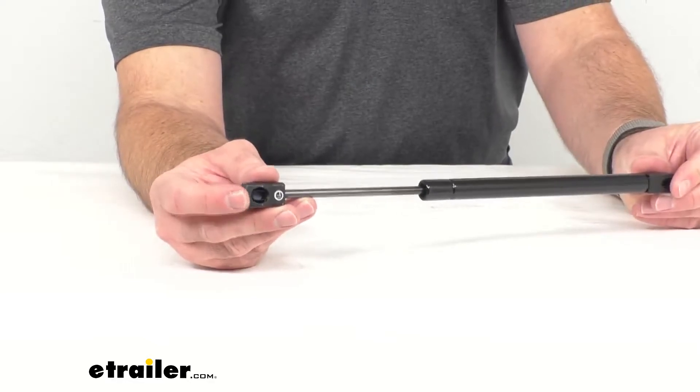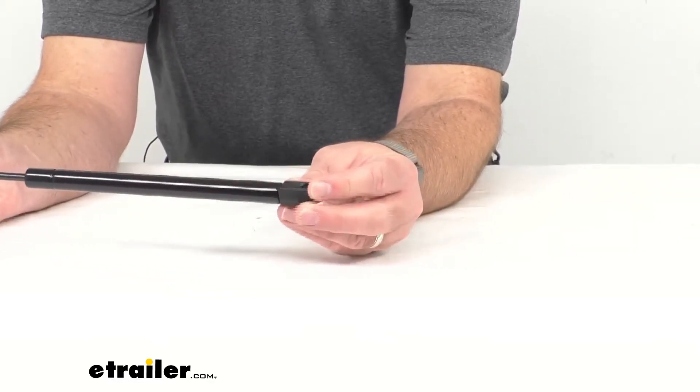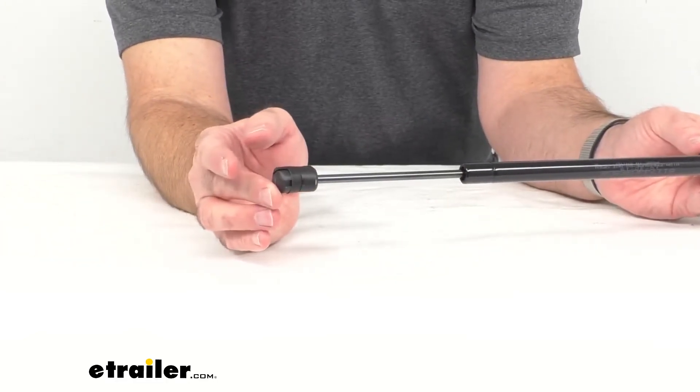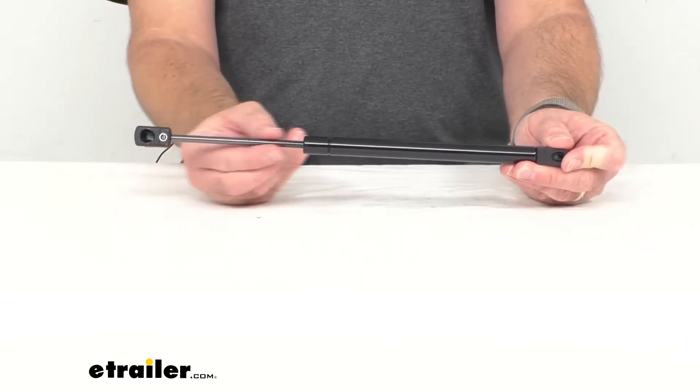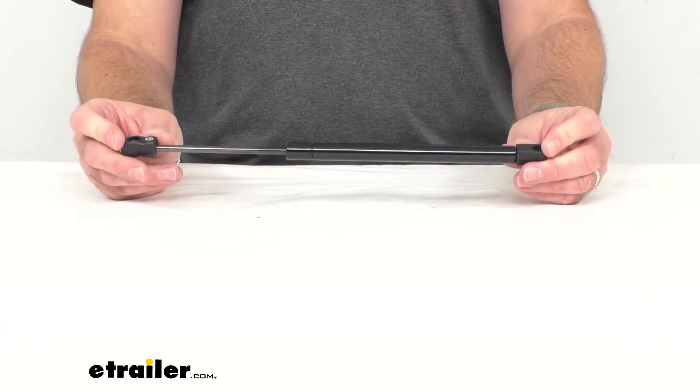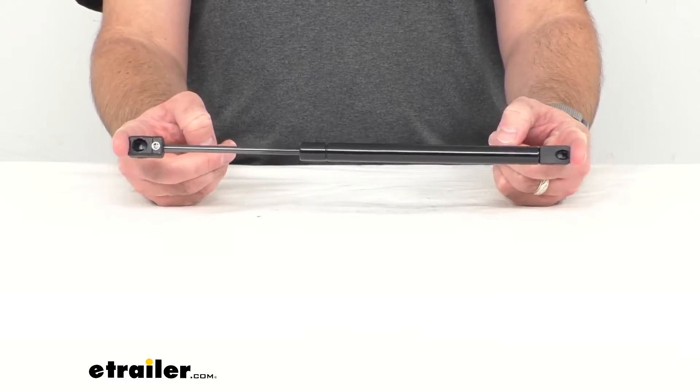The nylon ball and socket connectors install directly to your existing original equipment manufacturer fittings. This nitride coated steel shaft is corrosion resistant for long lasting performance and you will get one lift support.